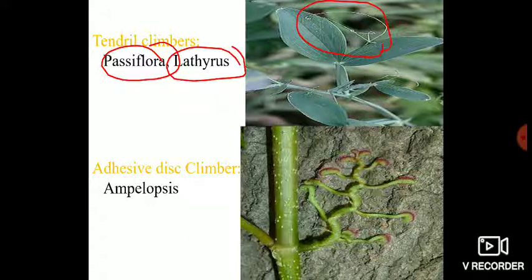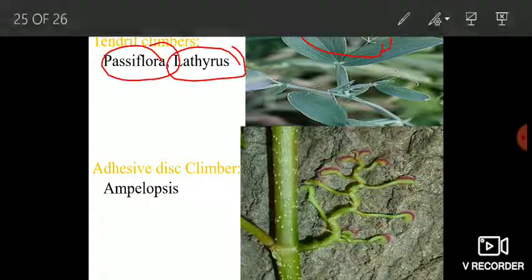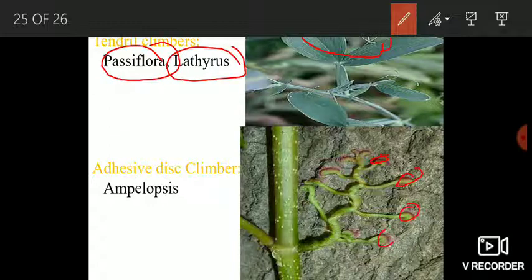One more category is adhesive disc climbers — those climbers which climb through a support with the help of specific disc-like structures. The example is Ampelopsis. You can see in the image that Ampelopsis possesses specific disc-like structures, and with the help of these discs it climbs the support.